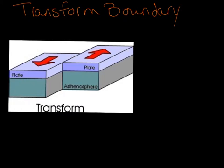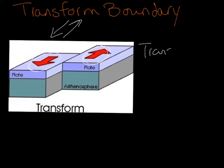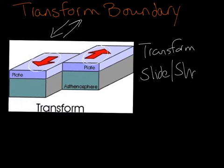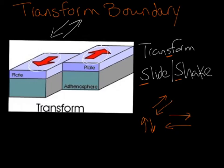Here we have a transform boundary. Looking at the arrows, they're sliding past each other. The strategy for this one is 'transform, slide, shake' — there's an S in transform, S in slide, S in shake. They can slide at various angles, as long as they're sliding one past the other.